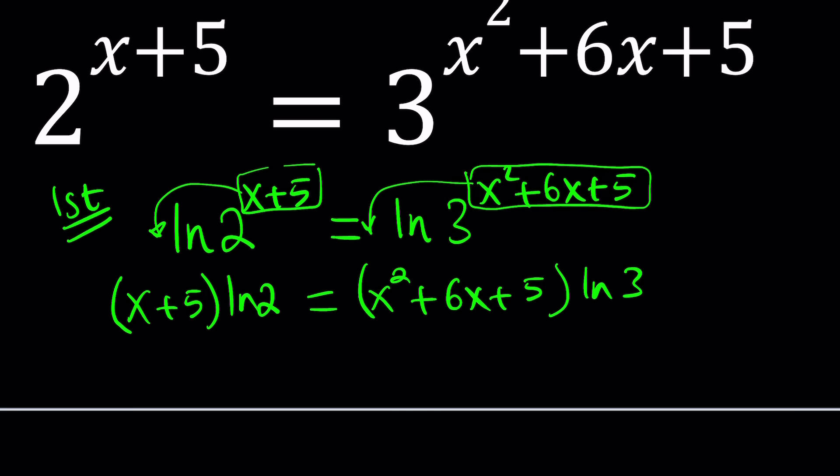Now if you use another base — let's say you use base 10 for log — then you would just get the same thing, but instead of ln 2 and ln 3, you would have log 2 and log 3. What's the difference? Nothing, because when you look at the end, you're going to get the same thing, just expressed differently.